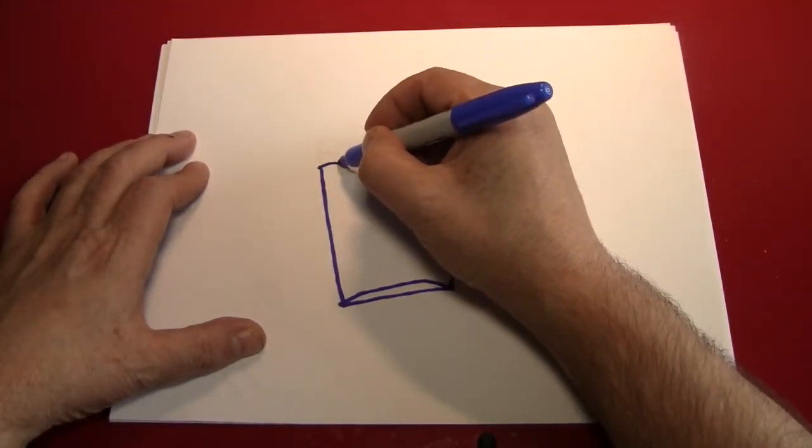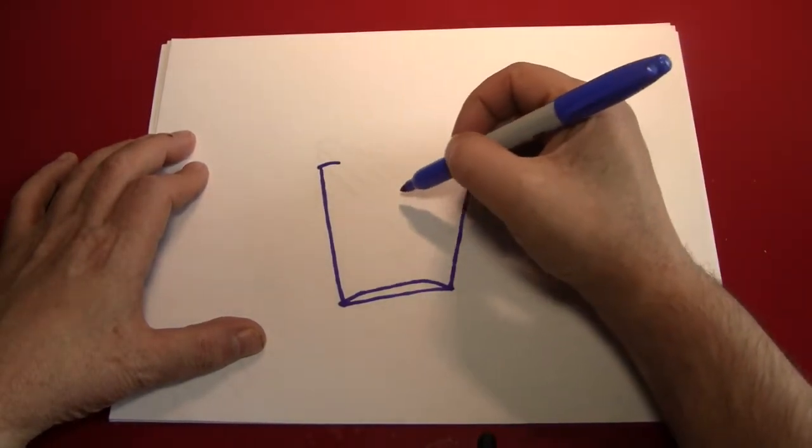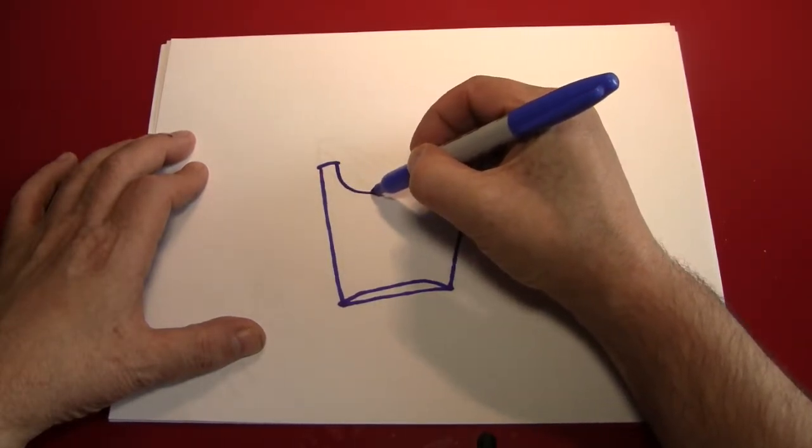So just a curve over here and a curve over here. And then make a curve going between those two. So bring this down like that.